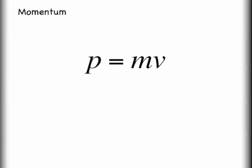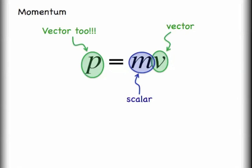Let's go back for a moment and look at one other component of this equation. If you recall, velocity is a vector and mass is a scalar. Remember that any time I have a vector operated on by a scalar, it must return another vector. So it's very important to remember that momentum is also a vector.